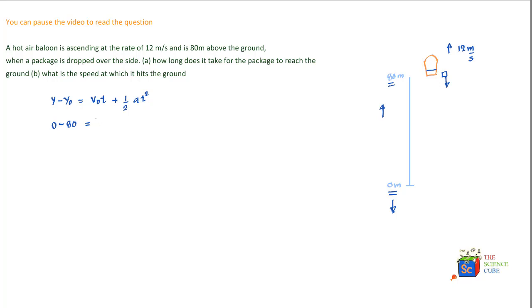v0, now you see its initial velocity of the packet is also, it's going down but its initial velocity is also the same as that of the hot air balloon which is 12 meters per second. So we substitute the initial velocity of the package as plus 12 meters per second and t is what we have to calculate.